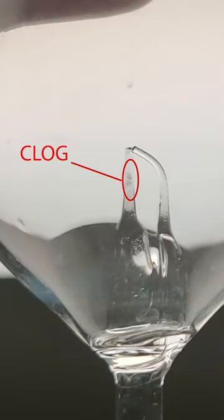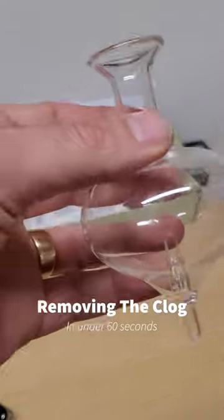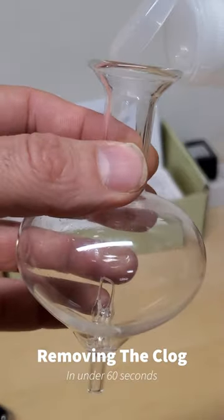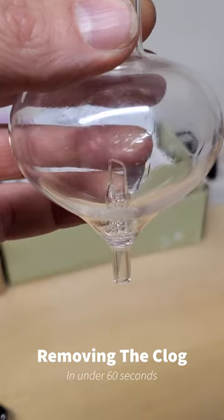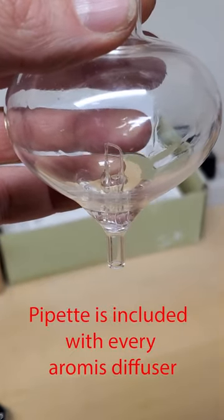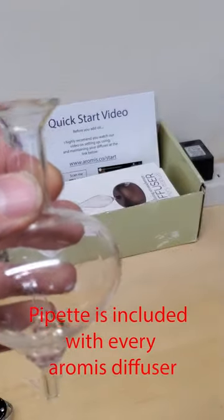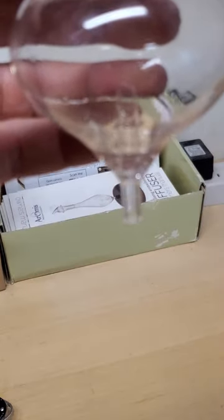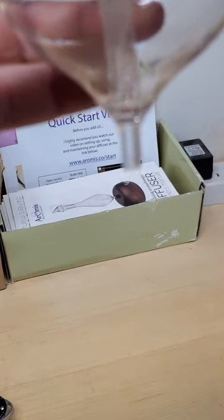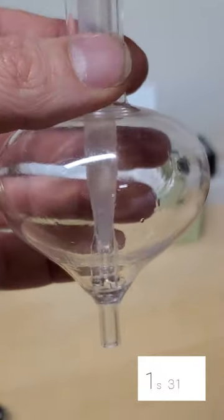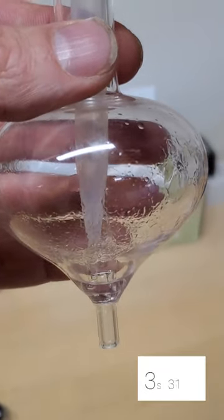Okay, so all I'm going to do is add some 91% rubbing alcohol in there, and I'm going to use the pipette and flush it out.